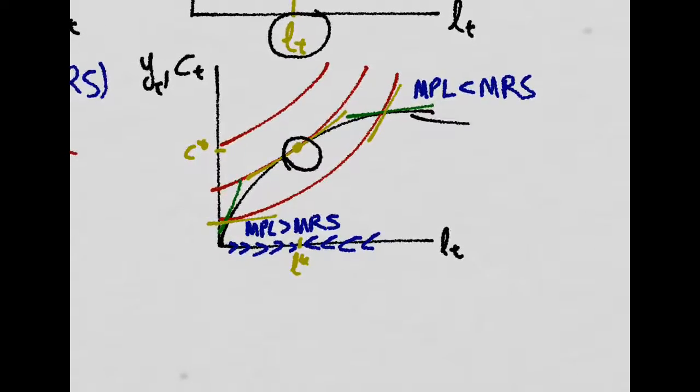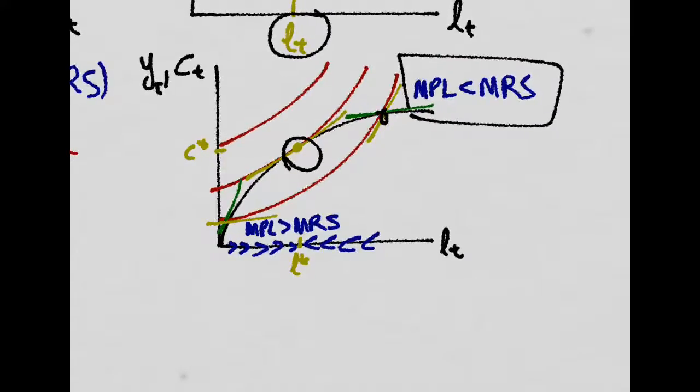Any difference between the MRS and the MPL will bring the labor amount down or up until the equilibrium is reached.